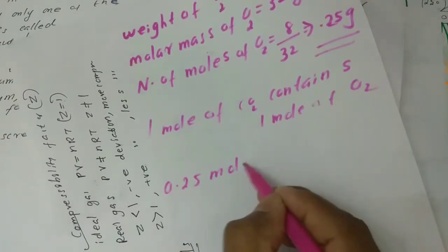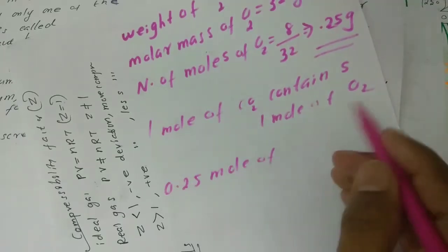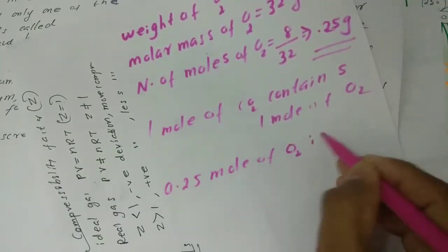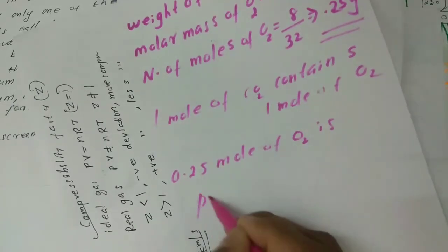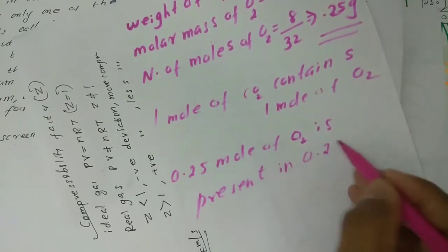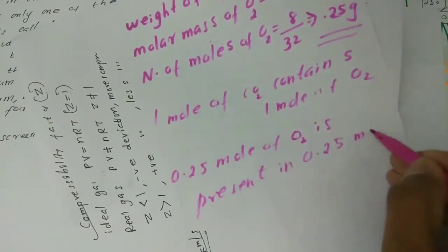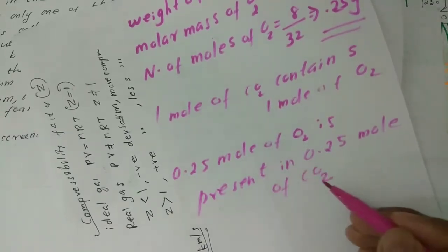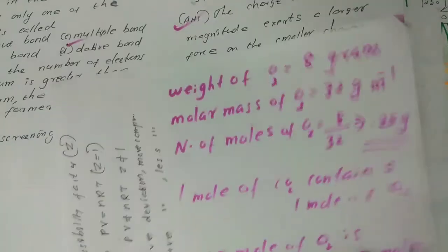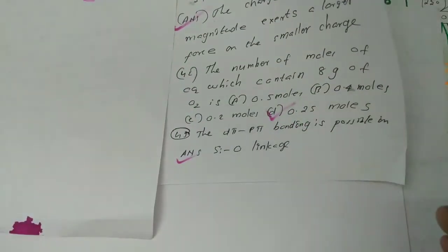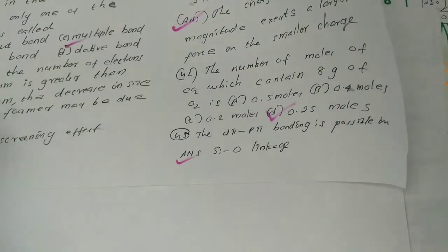Therefore, 2.5 moles of oxygen is present in 2.5 moles of CO2. The answer is 2.5 moles of CO2.